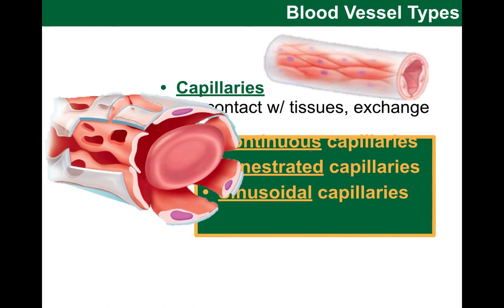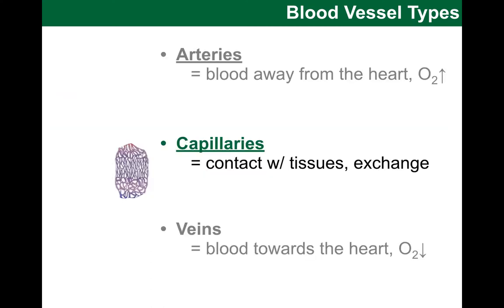Finally, sinusoidal capillaries are found typically in the liver, bone marrow, spleen, and adrenal medulla. They have huge gaps in their walls, much bigger than the fenestrations seen in fenestrated capillaries. By having these huge gaps, blood is slowed down in its passage, allowing much more processing. So structures with sinusoidal capillaries are often concerned with cleaning the blood.